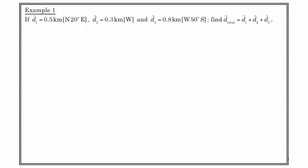So here's an example. Three displacement vectors: 0.5 kilometers north 20 degrees east, 0.3 kilometers west, and 0.8 kilometers west 50 degrees south. Find the resultant vector of these three.